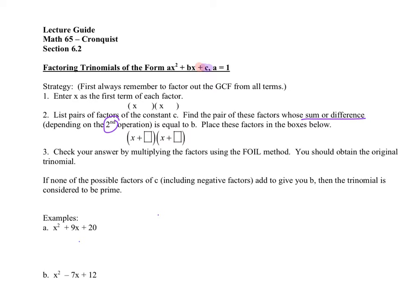depending on the second operation: if it's a plus, you're going to add the factors to equal b; and if it's a minus, you're going to subtract the factors to equal b. Then place these factors in the two boxes. Check your answer by multiplying — by FOILing the two factors — and you should obtain your original trinomial. If none of the possible factors of c, including negative factors, add to give you b, then the trinomial is considered to be prime.